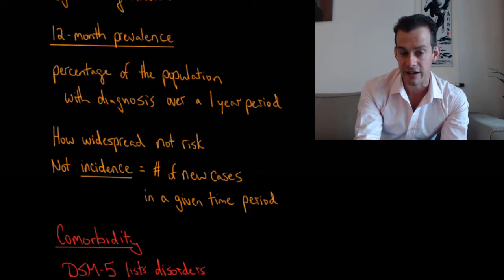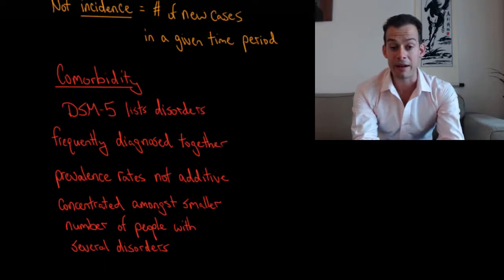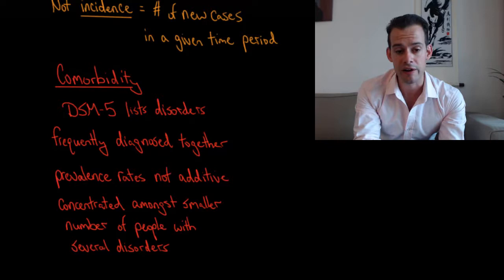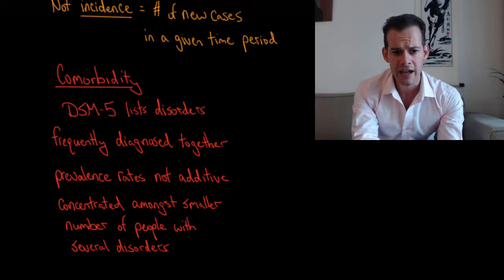And it's important to remember in the DSM that we're talking about prevalence, we're not talking about new cases each year. And lastly we have mention of the comorbidity of illnesses in the DSM-5. And so I mentioned comorbidity in a previous video, and this refers to illnesses or disorders that are diagnosed at the same time in the same patient. So the DSM-5 lists disorders that are frequently diagnosed together.